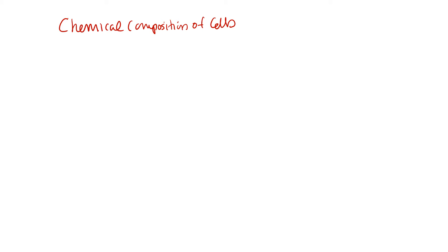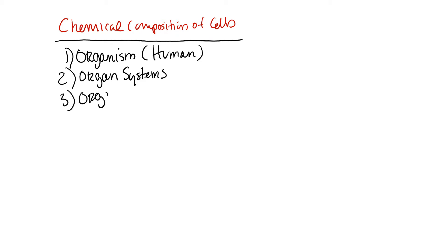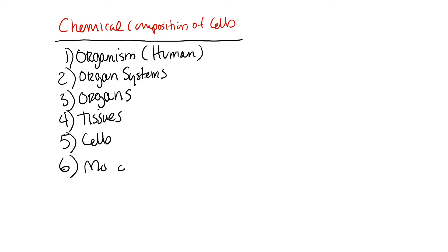We're going to talk about the chemical composition of cells. You might ask why, when we're discussing human biology. When you look at yourself or any friend or family member, you see an organism. Zooming down, that organism is made of many organ systems, which comprise organs working together for the body. Zooming in on those organs, we see tissues — cells working together — and zooming into cells, we have molecules.